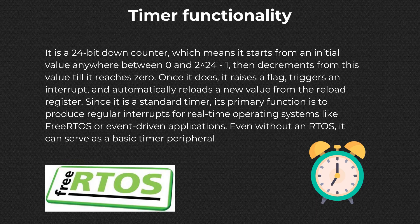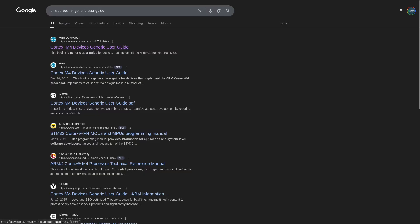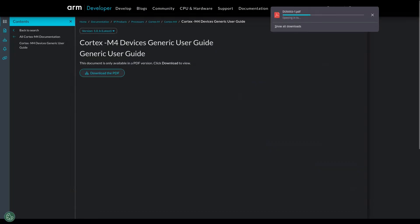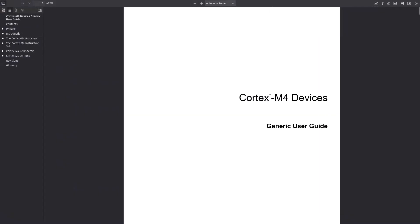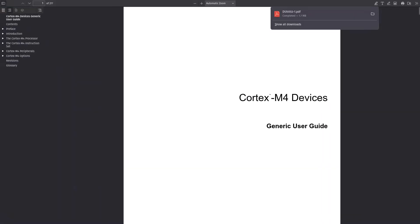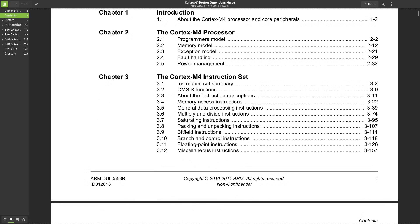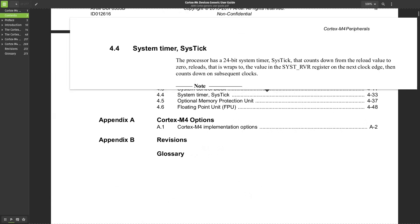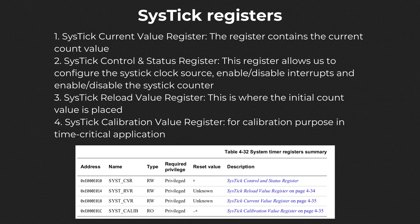First, we need to know what registers we need to write to. To do so, we need its reference manual. Search for the Cortex-M4 generic user guide, which should be available with a quick search. The reason we're looking for a separate document is that SysTick is a core peripheral of ARM Cortex, so the complete information regarding it isn't available in the STM32 reference manual. Chapter 4 is where we can find information on these core peripherals, including the SysTick Timer. Its registers are: the Current Value Register, which contains the current count value; the Control and Status Register, which allows us to configure the SysTick clock source, enable/disable interrupts, and enable/disable the SysTick counter; the SysTick Reload Value Register, where the initial count value is placed; and the Calibration Value Register, for calibration purposes in more demanding applications, not covered in this video.